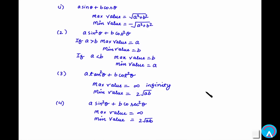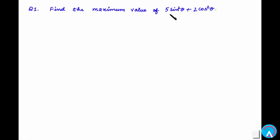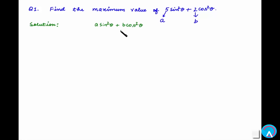Now let's take some questions based on these formulas. Question 1: find the maximum value of 5·sin²θ + 2·cos²θ. Here a = 5 and b = 2. Since a > b, for a·sin²θ + b·cos²θ the maximum value equals a. So the maximum value is 5.